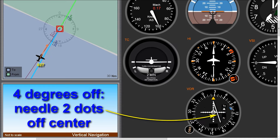Quite sensitive. All I need to do now is make a little correction toward the needle. The needle is to the right, which means I have to fly to the right to get back. We can see here that that is correct.